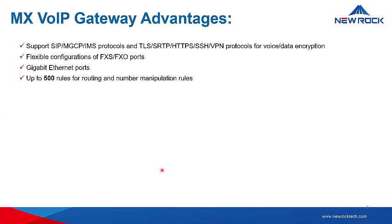We also have up to 500 rules for routing and number manipulation. Up to 500 number transformation rules — you can keep, remove, replace, or add a suffix to a number. We support T30 and T38 fax, with high-speed fax at a maximum rate of 33.6 kbps by T38 or G711 pass-through.